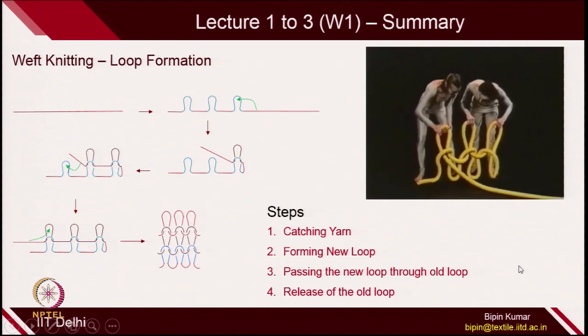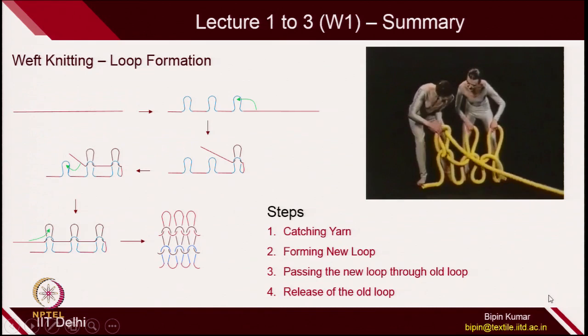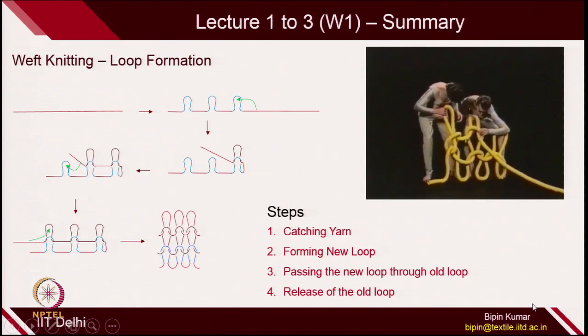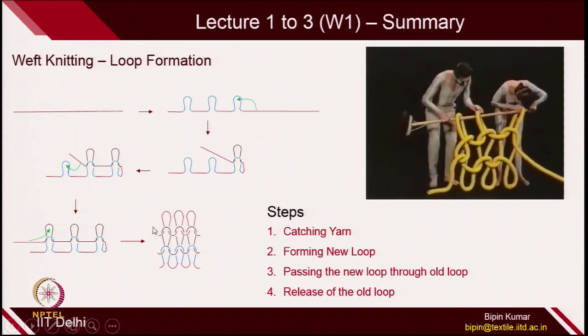The same process is repeated from the other side — you catch the yarn, make the loop, and pass through the old loop. Then again you do the same process: catch the yarn, make the loop, and pass through the old loop. This is how, in general, loops are being created inside a knit fabric structure.